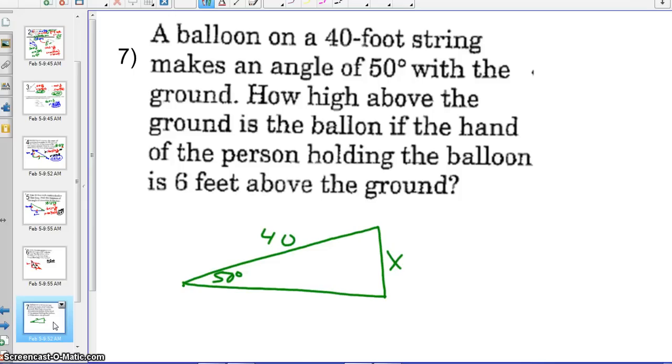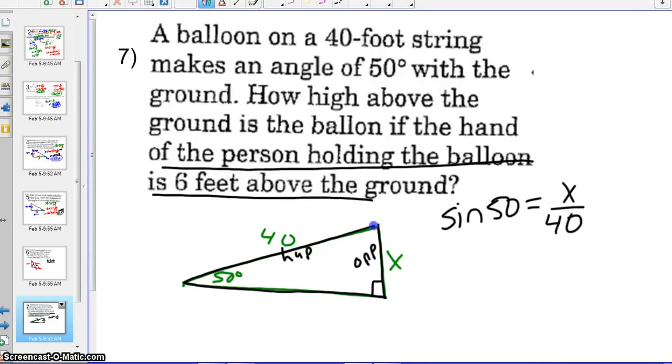And for this one, it says that we have a 40-foot string, makes an angle of 50 degrees, and it wants to know how high the balloon is from the ground. So when we're solving this one, again, look at what trig function. We have the hypotenuse and the opposite, so we need the sine of 50 is equal to x over 40. What we need to keep in mind is that the last part here, that the person holding the balloon is 6 feet above the ground. So this person is holding it an extra 6 feet. So whatever we get for x, we need to add 6. Go ahead and finish that one for tomorrow.